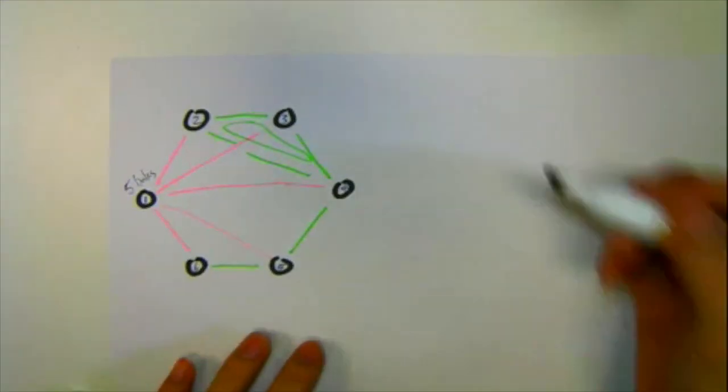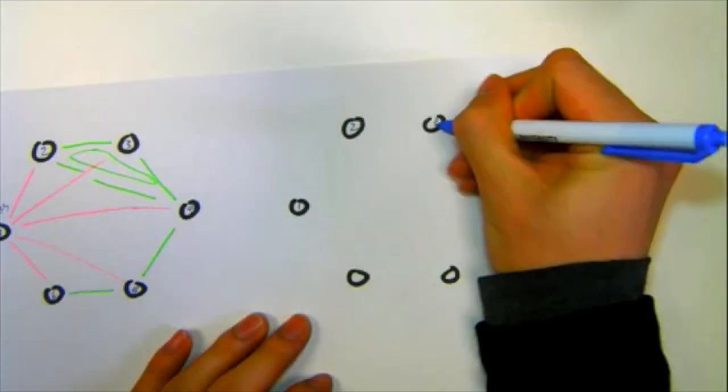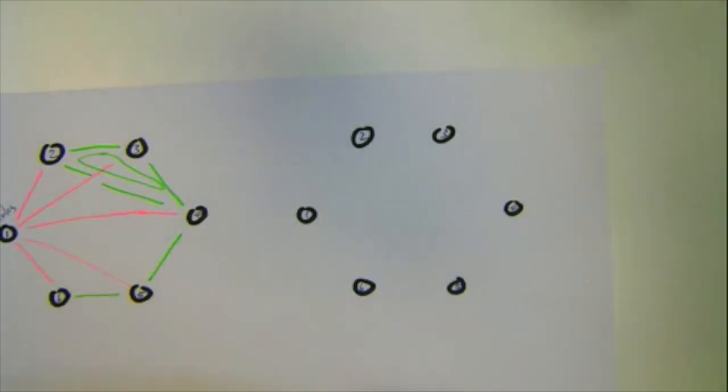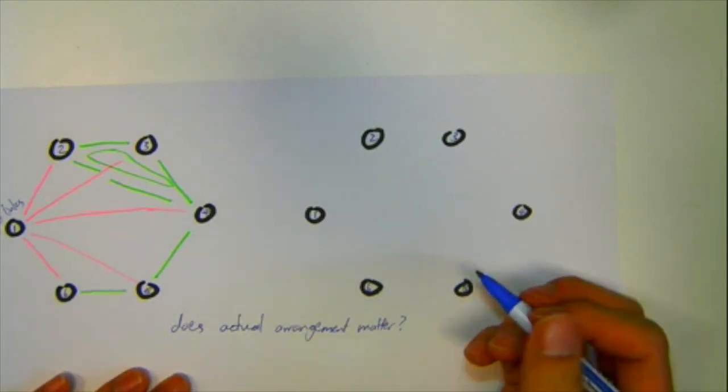Throughout this whole process, you have to keep asking questions to yourself. How many pink lines do we need before we can force one of these triangles? What if we say that person 1 has 3 or more friends, just randomly, as a random guess?